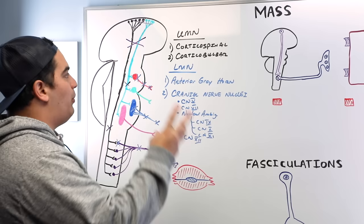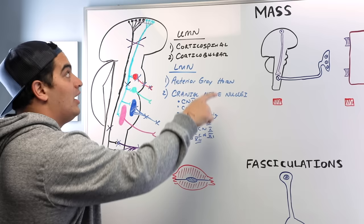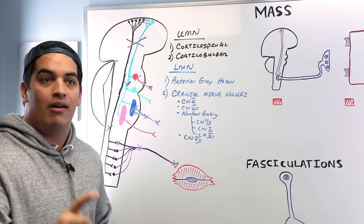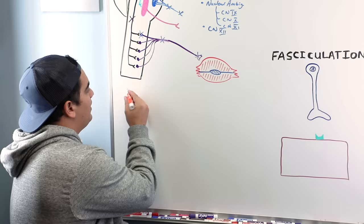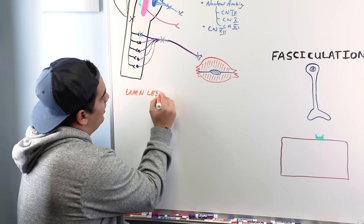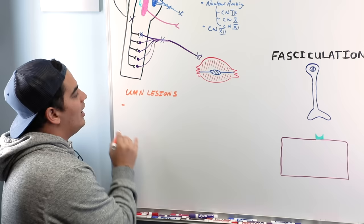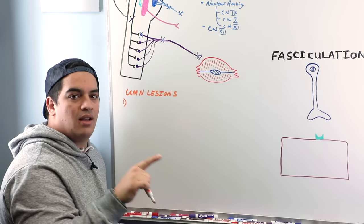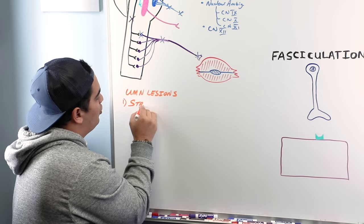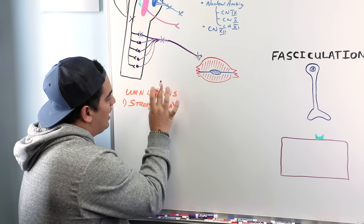Now let's talk about causes. For upper motor neuron lesions, the most common cause is stroke — a CVA, whether hemorrhagic or ischemic — which can damage any component of the upper motor neuron pathway. Demyelinating conditions are another category: multiple sclerosis can demyelinate the axons of the corticospinal tract, as can Friedreich's ataxia and B12 deficiency.